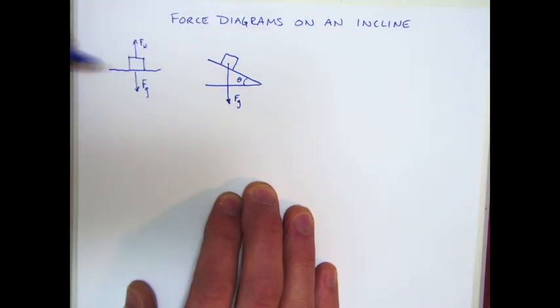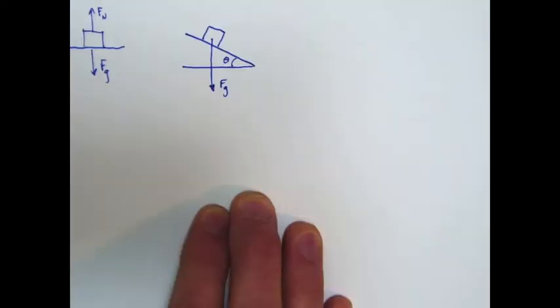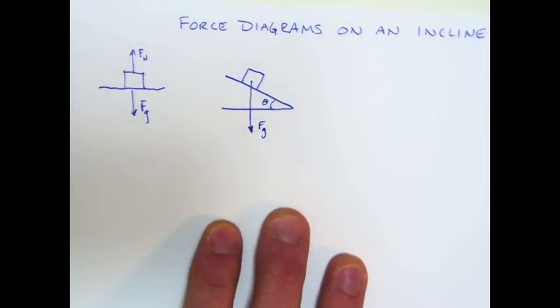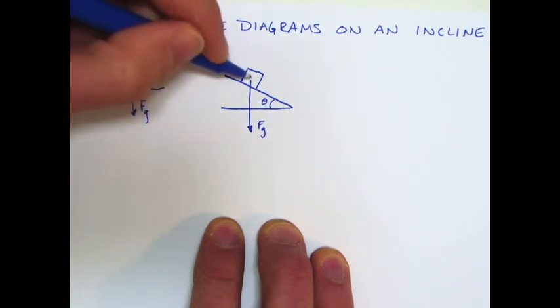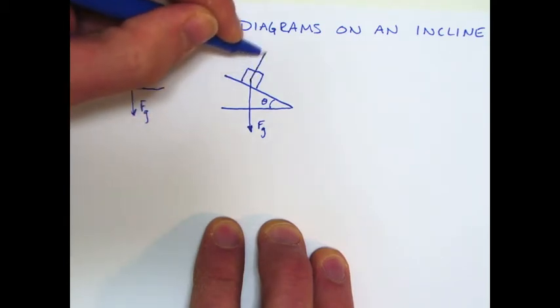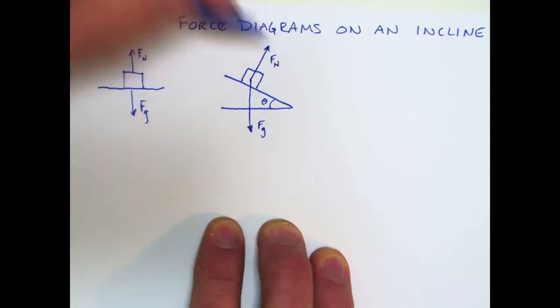Alright, now in the flat surface example we had the normal force. Let me just zoom in here. We had the normal force going straight up, opposite gravity. And so you might think to yourself, well, the normal force goes opposite gravity here again. But that is not the case on an incline. The normal force always is perpendicular to whatever surface your object is on.